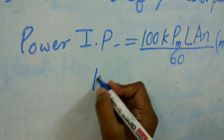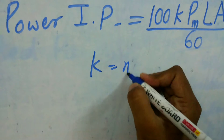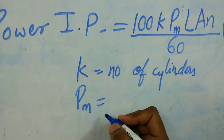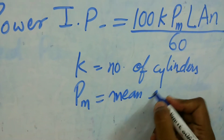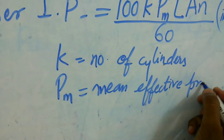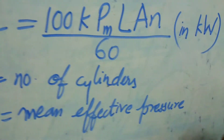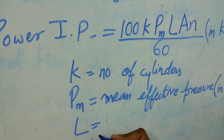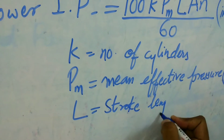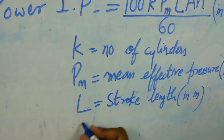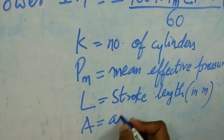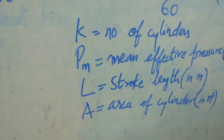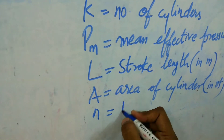Here k is the number of cylinders, and pm is the mean effective pressure with the unit bar. Capital L is the stroke length in meters, and A is the area of the cylinder in meter square, which we have already seen how to calculate.